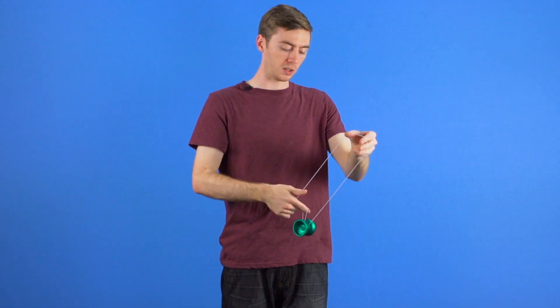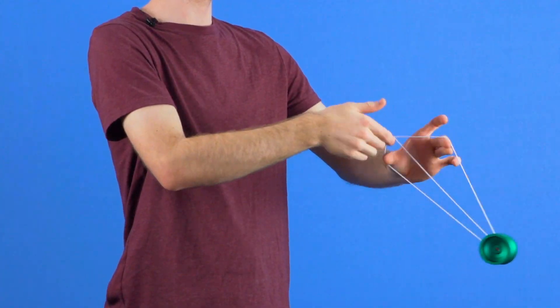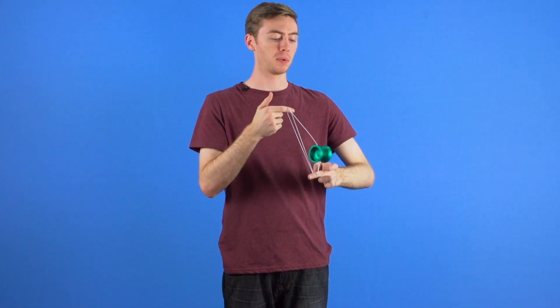This one is pretty tricky, so it does take a lot of practice to utilize the momentum of the boingy boing and move your thumb up and down to underpass the yoyo with the chopstick formation.